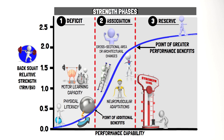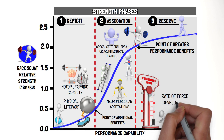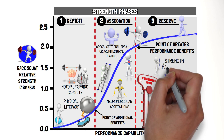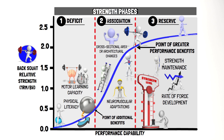Therefore, once a specific standard of strength has been achieved — for example, being able to back squat at least twice your body mass — the focus can then shift towards rate-of-force development training. This does not mean individuals should not seek to continue to improve their strength. Rather, it's recommended to focus more on strength maintenance, while placing more emphasis on rate-of-force development and speed adaptations.